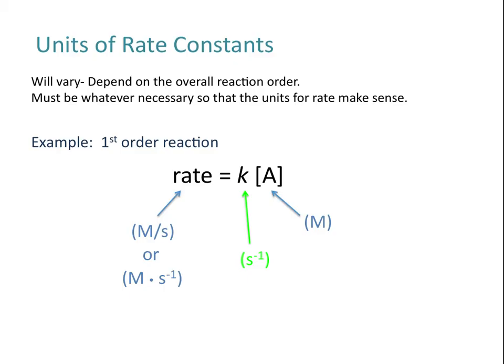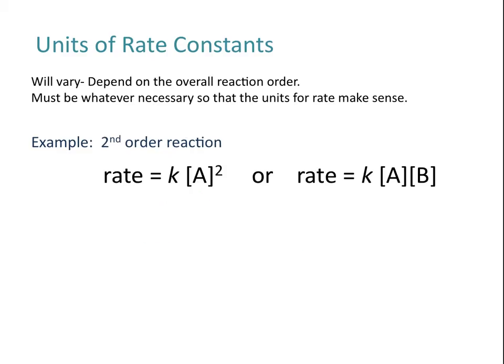You're going to follow this same process regardless of the units given for rate and concentration of reactants, and we'll be doing more of this in the next tutorial. Now let's look at a second order reaction example. That could be: rate equals the rate constant times the concentration of A to the second power, or it could be: rate equals the rate constant times the concentration of one reactant times the concentration of another reactant.